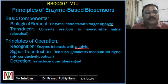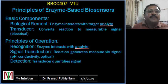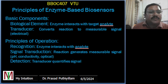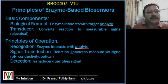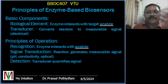The principle of operation: first, recognition — the enzyme specifically interacts with the target analyte, leading to a biochemical reaction. Then signal transduction — the biochemical reaction generates a measurable signal such as a change in pH, conductivity, or optical property of the molecule. Then detection — the signal is detected and quantified by the transducer, providing information about the concentration of the target analyte.